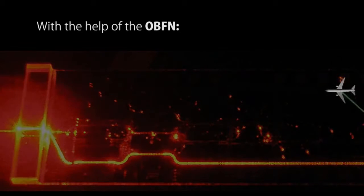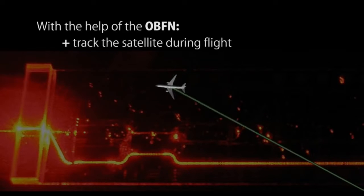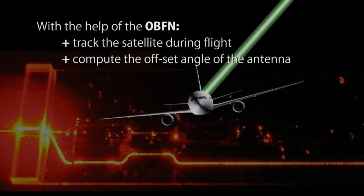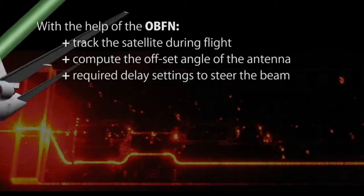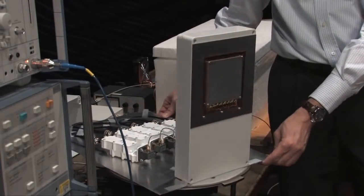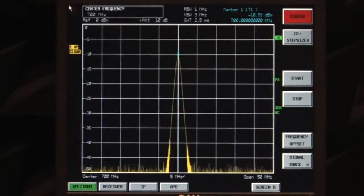With the help of the optical beamforming network, we can track the satellite during flight. We can compute the offset angle of the antenna and the required delay settings to steer the beam. Now, when we rotate the antenna once again, the received signal remains constant.